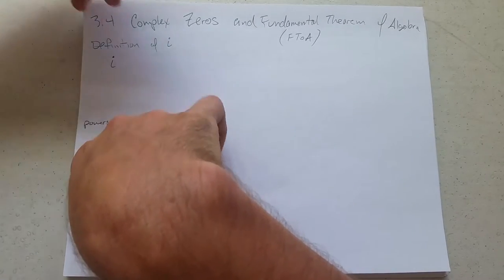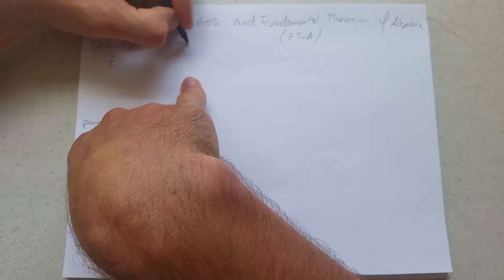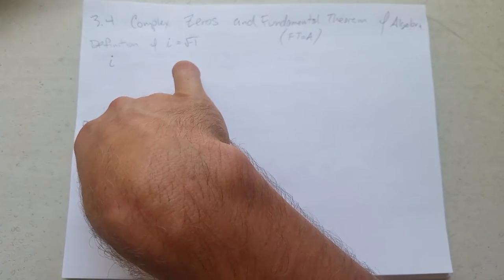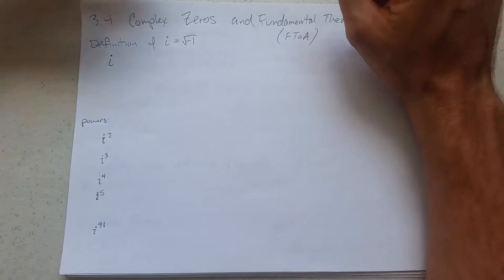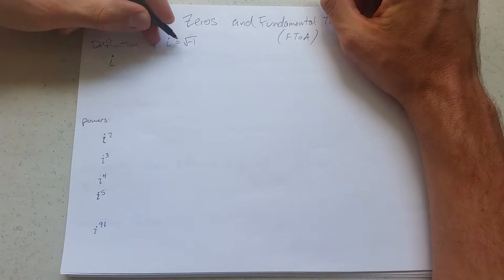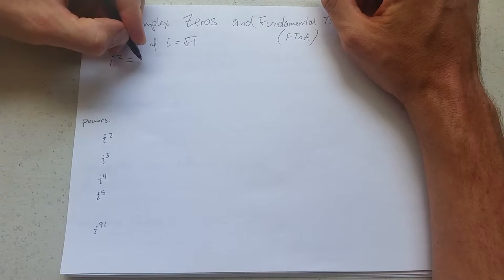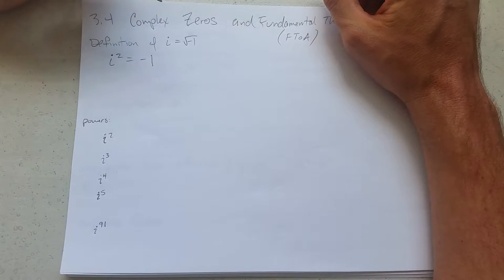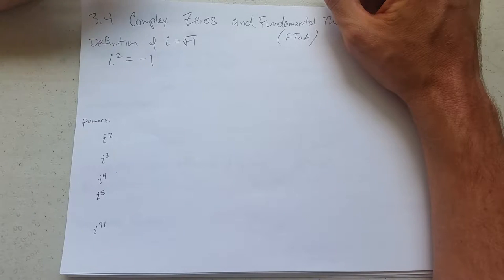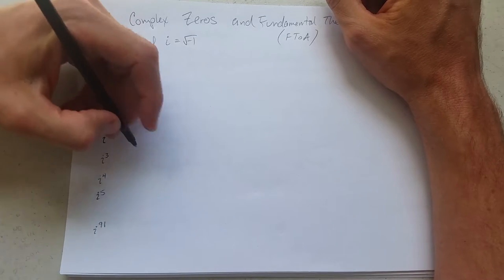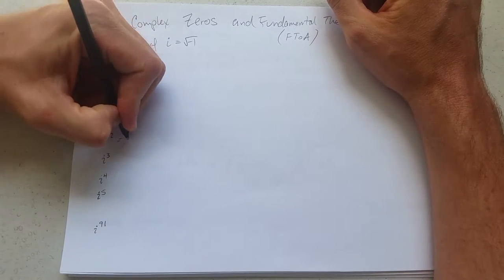So probably the best way to think about i is the square root of negative 1. Now another way to think about it, if you square it, i squared equals negative 1. You just square both sides of this equation, and you get i squared equals negative 1. So i squared is negative 1.